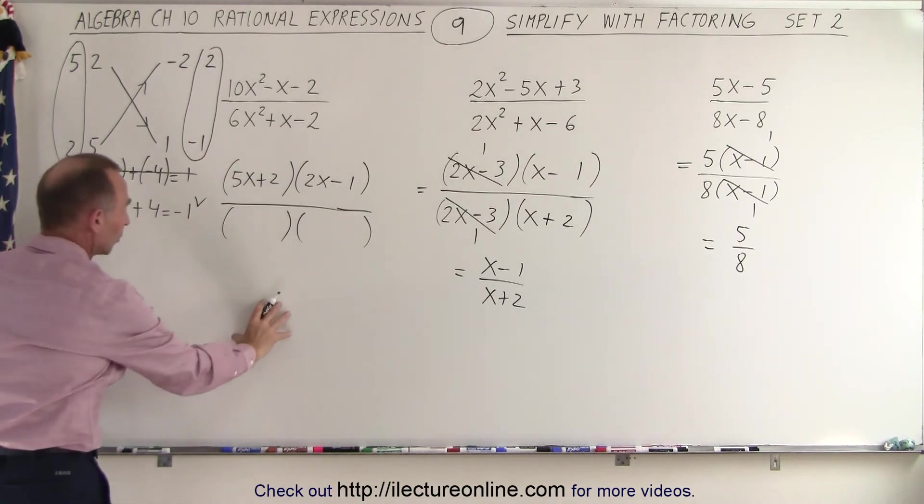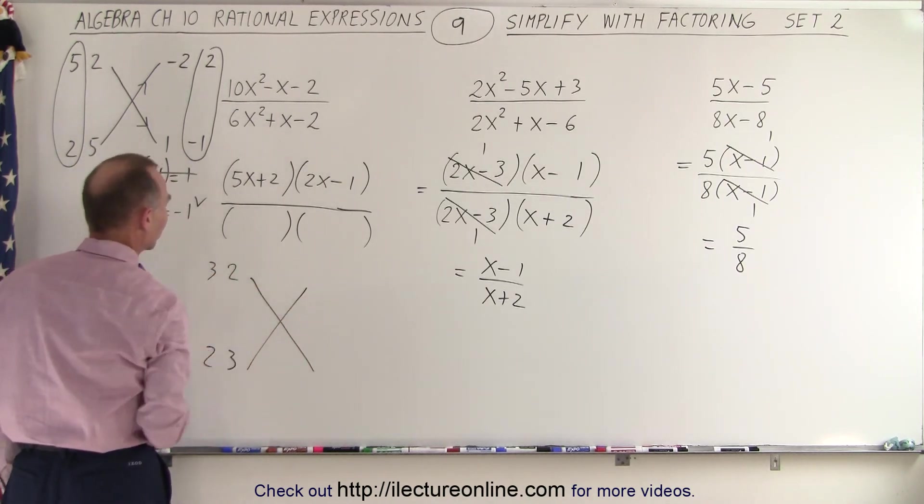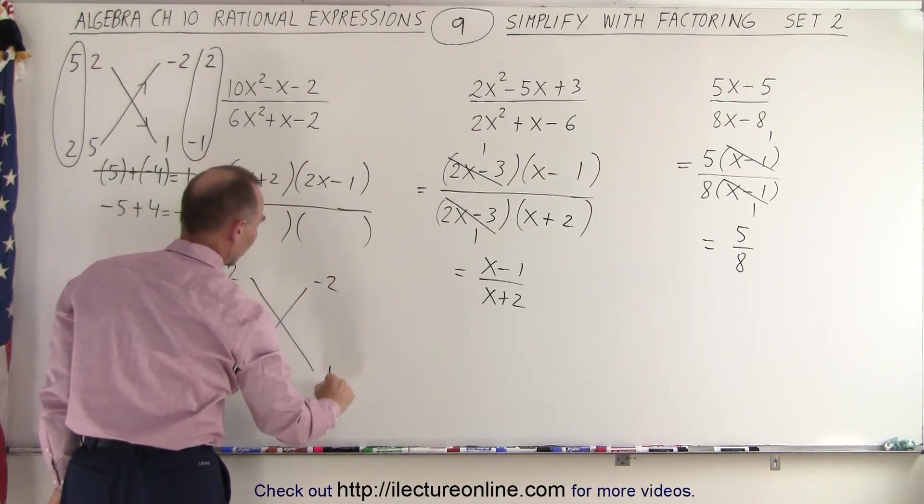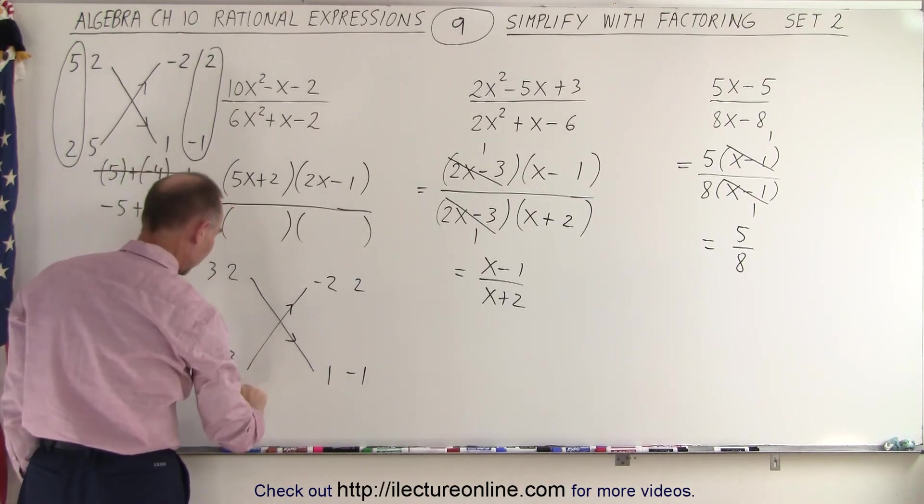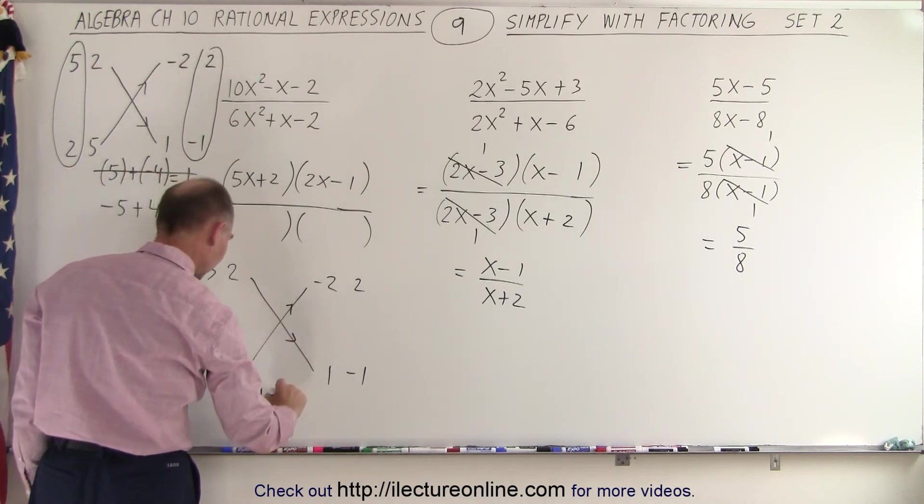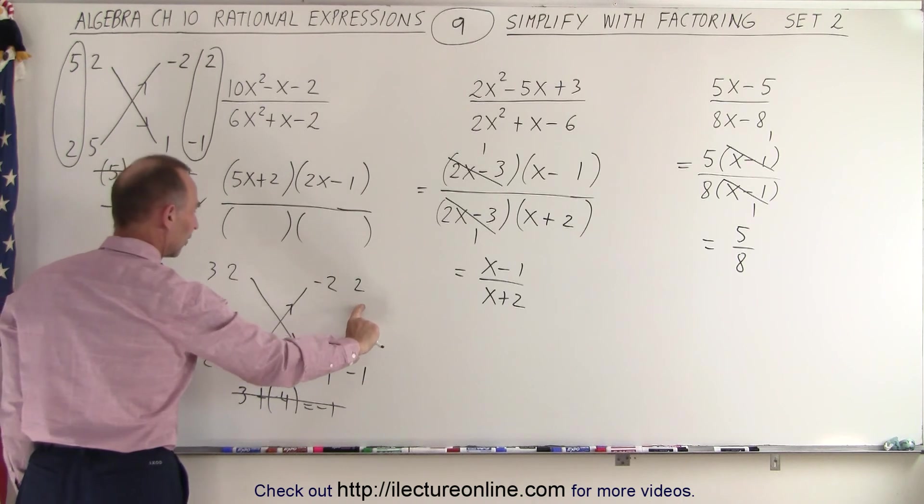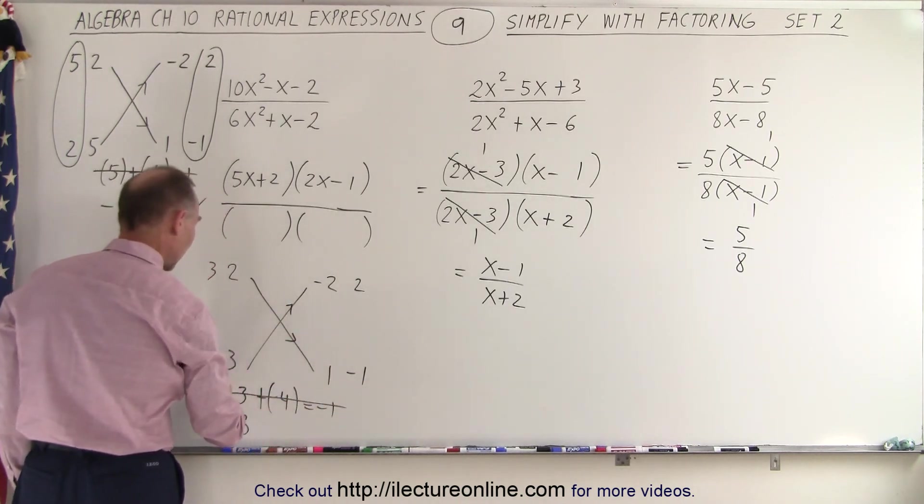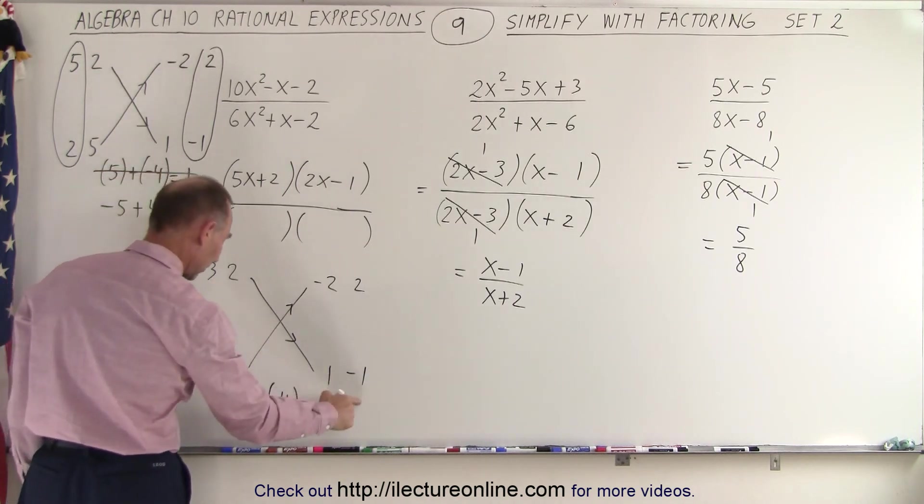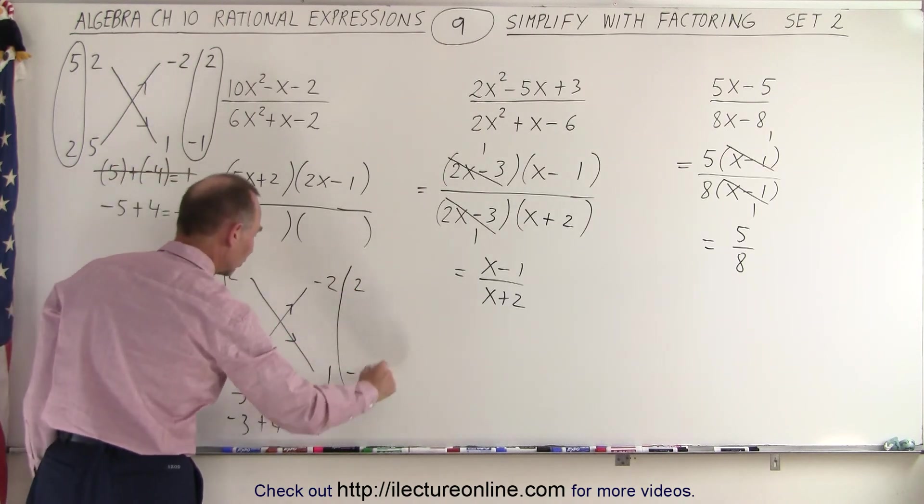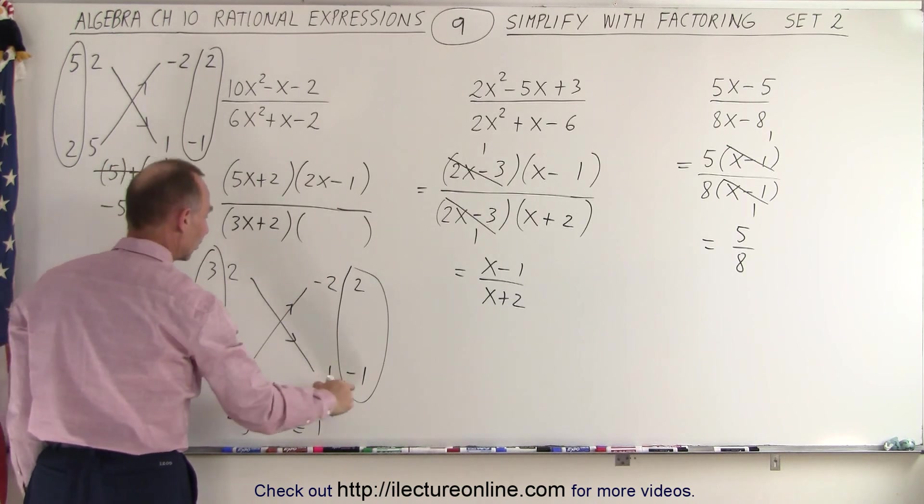Again, we're going to do the same for the denominator, so let me do it over here so you can see what I'm doing. Again, we need a 6 there, so to get the 6, we have 3 and 2, or 2 and 3 as possible combinations. For the negative 2, we have a negative 2 and a positive 1, or a positive 2 and a negative 1. Let's see which combination gives us the middle term. 3 times 1 gives us 3, plus 2 times a negative 2 is a negative 4, which combined gives us a negative 1, but I need a positive 1, so that's not the right combination. So maybe if I reverse the signs, if I go 3 times negative 1, that's a negative 3, and 2 times a positive 2, that's a plus 4, that gives me a plus 1. That looks like it's the right combination. So when I then say that 3x plus 2 for my first binomial, and 2x minus 1 for my second binomial.